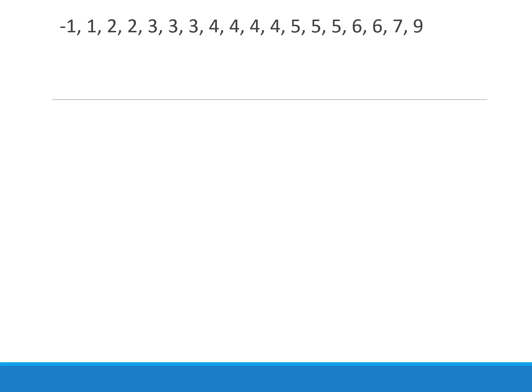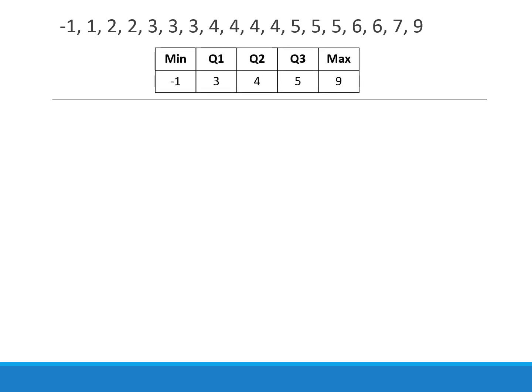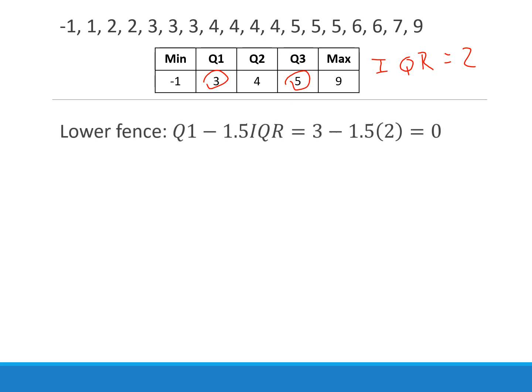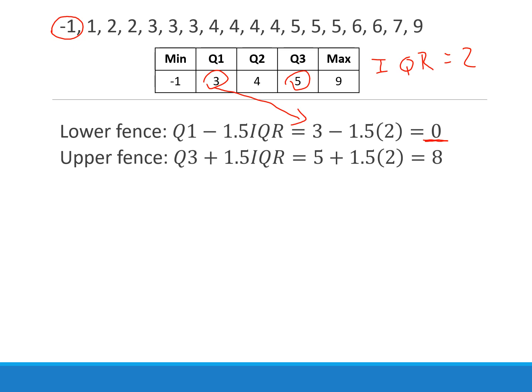Once we're in class, I'll show you how to get the five number summary on our calculator. For now: the IQR is 2. Lower fence: Q1 (3) minus 1.5 times IQR (2) equals 0 — anything below 0 is an outlier, so negative one is an outlier. Upper fence: Q3 (5) plus 1.5 times IQR (2) equals 8 — anything above 8 is an outlier, so nine is an outlier.